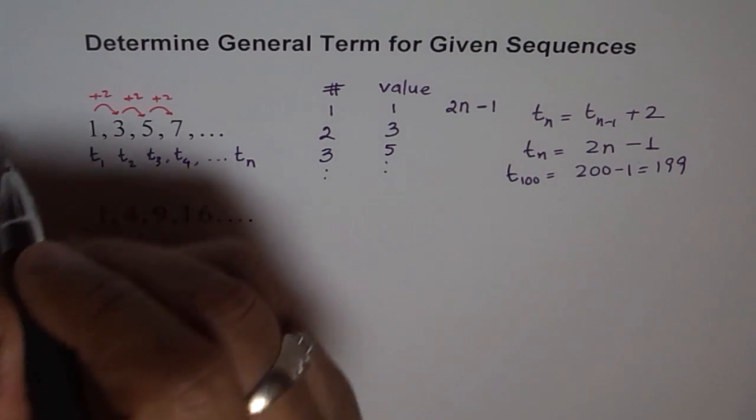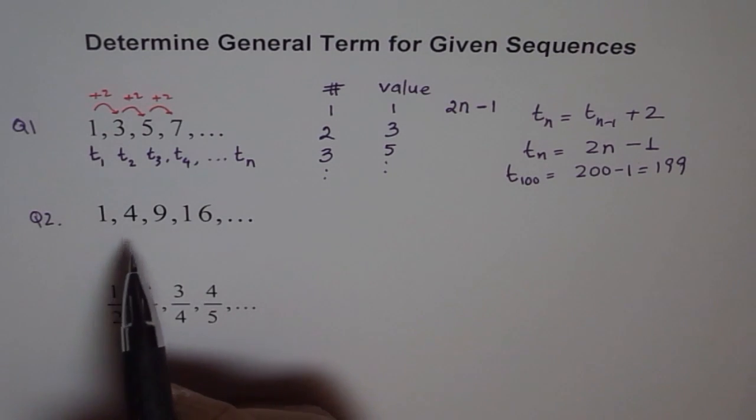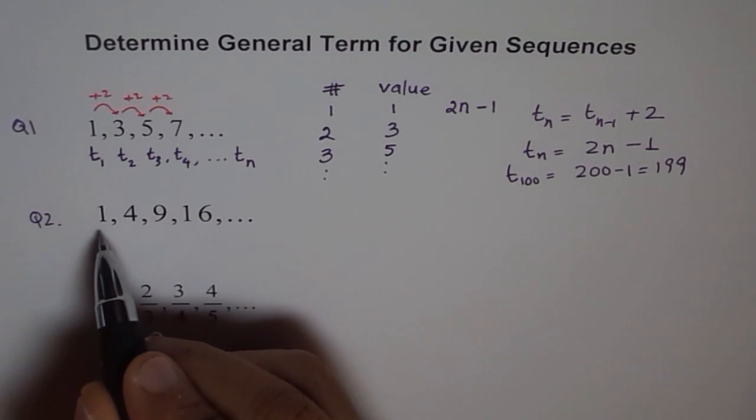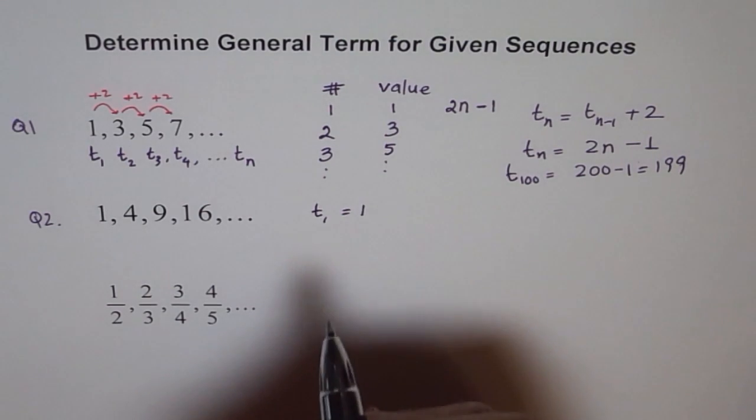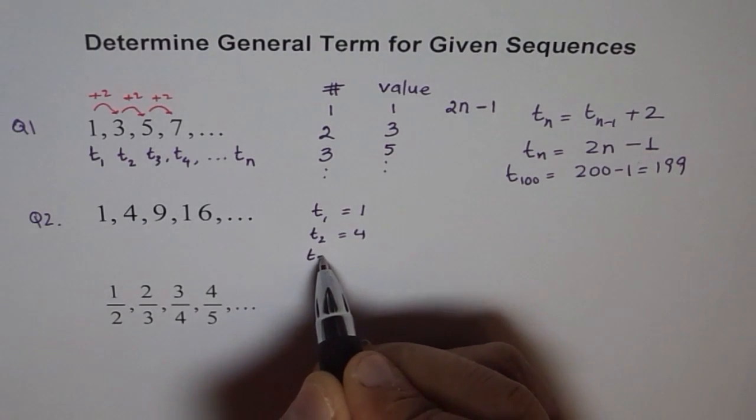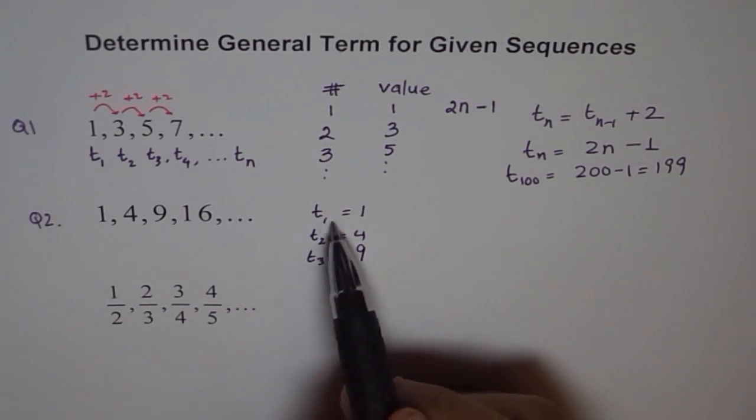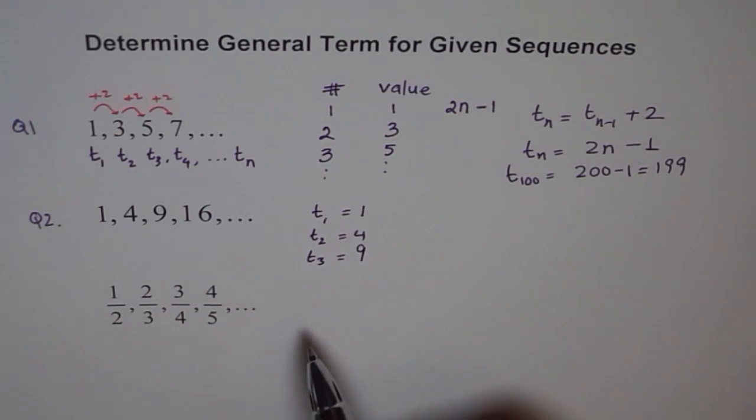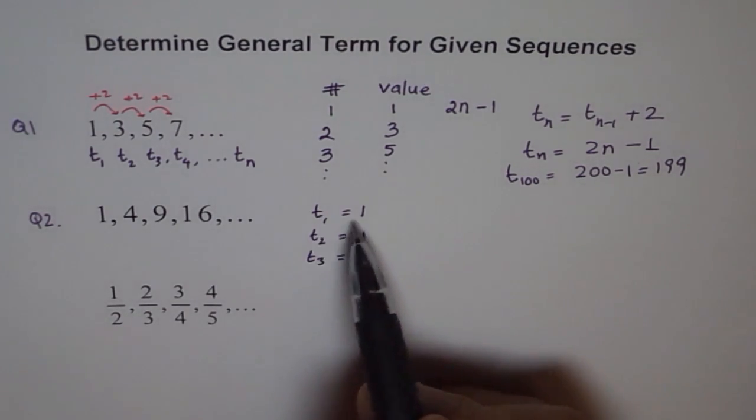Let's look at the next question. This was our question number 1, and now let's do question number 2. Here, the terms are that t1 is 1. T of 2 is 4 for us. T of 3 is 9 for us. Do you find a relation between these numbers? T of 4 is 16. 16 is 4 square, 9 is 3 square, and then 4 is 2 square, 1 is 1 square.